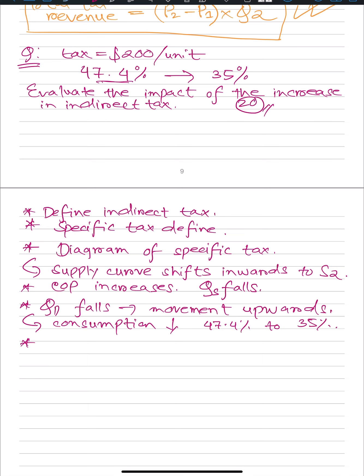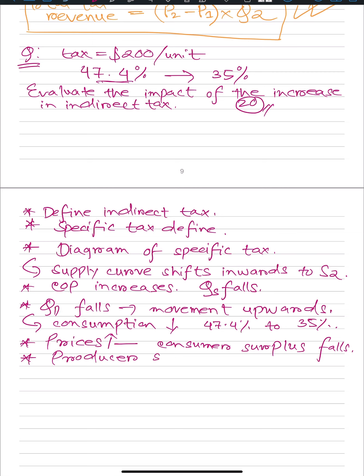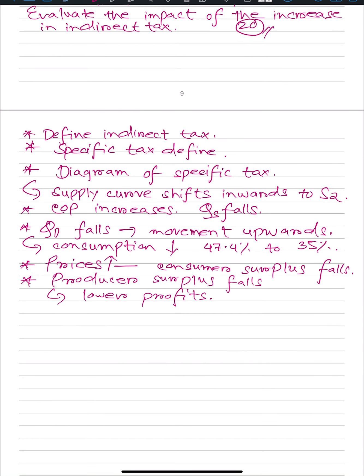Prices increase. When prices increase, consumer surplus falls. Producer surplus also falls because prices increase and quantity supplied decreased, so lower profits. These are easy points — it's really just basic demand and supply stuff.